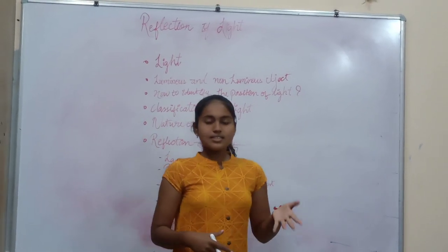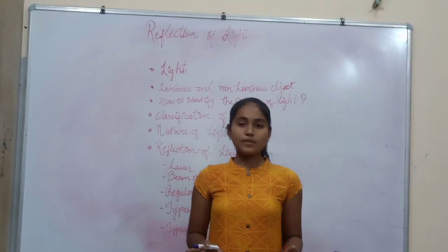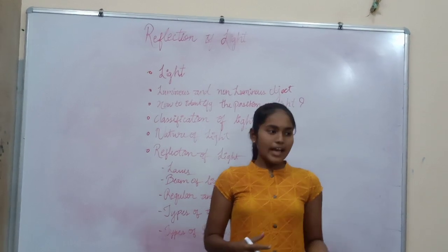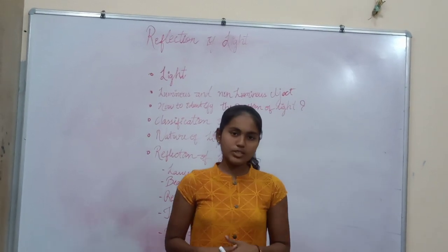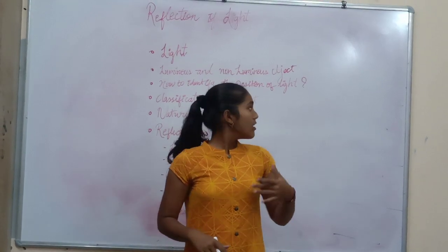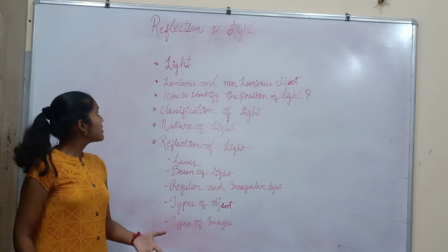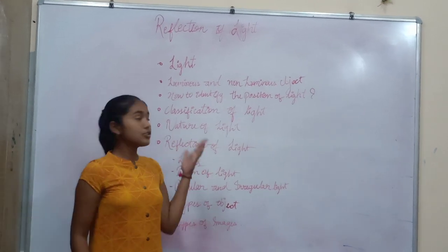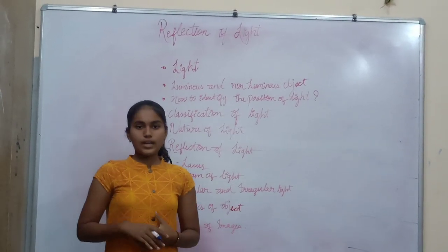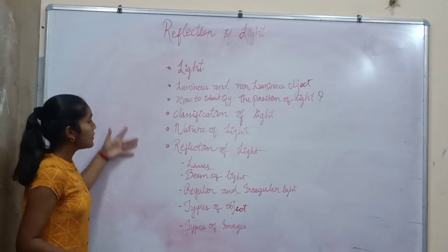Science is used in every criteria, in every field of the world. All of this world is made up of science. Today we are going to discuss science about light. Light has two parts — first one is the reflection of light, and second one is the refraction of light. In this video we are going to discuss about the reflection of light.